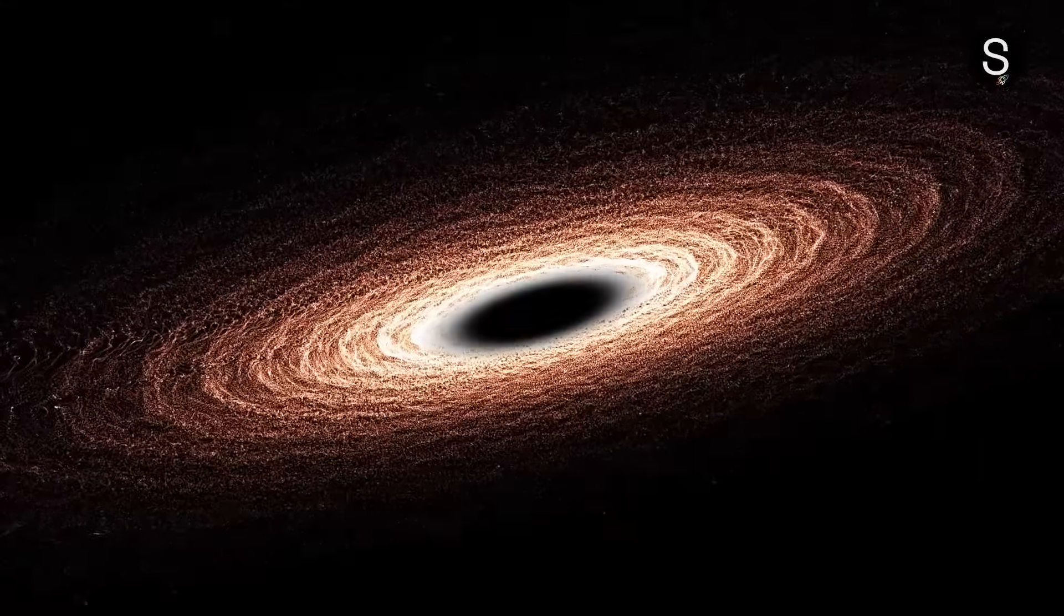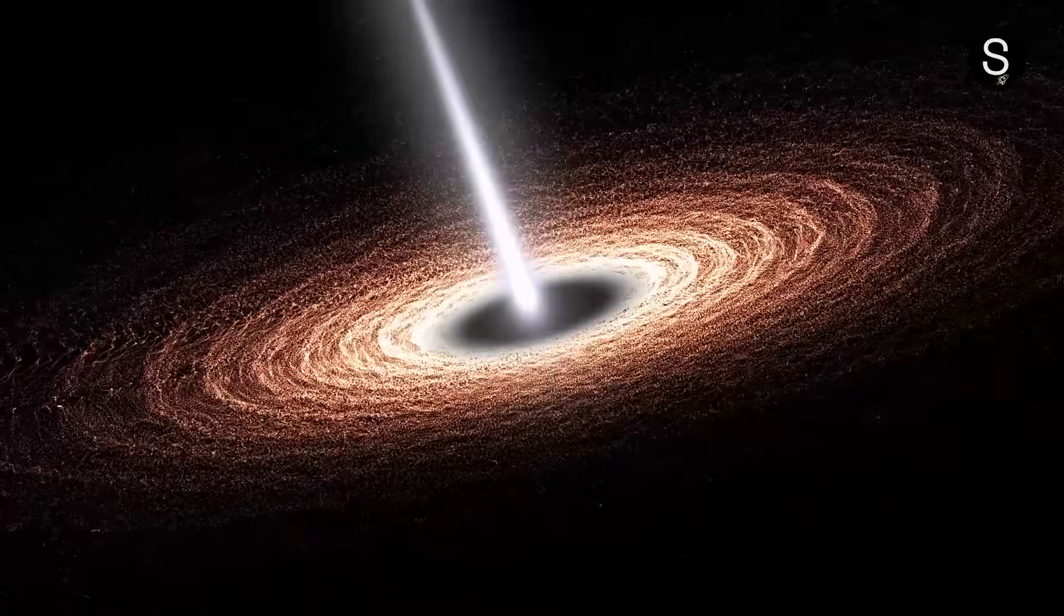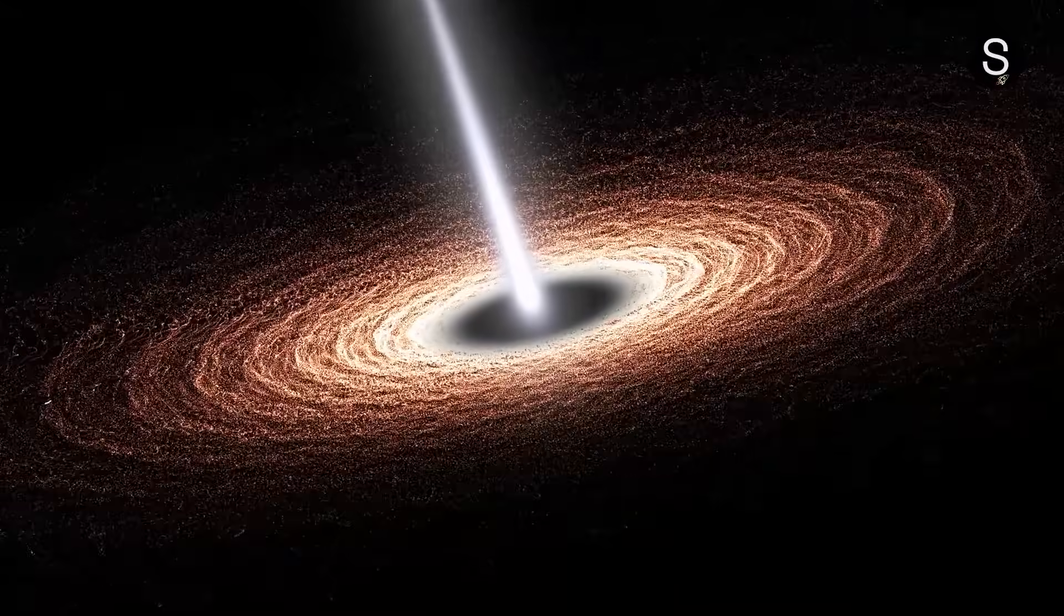Items that fall into a black hole start spinning around it, generating an accretion disk of gas and dust. The friction of this disk heats the material, causing it to emit light and other forms of radiation.